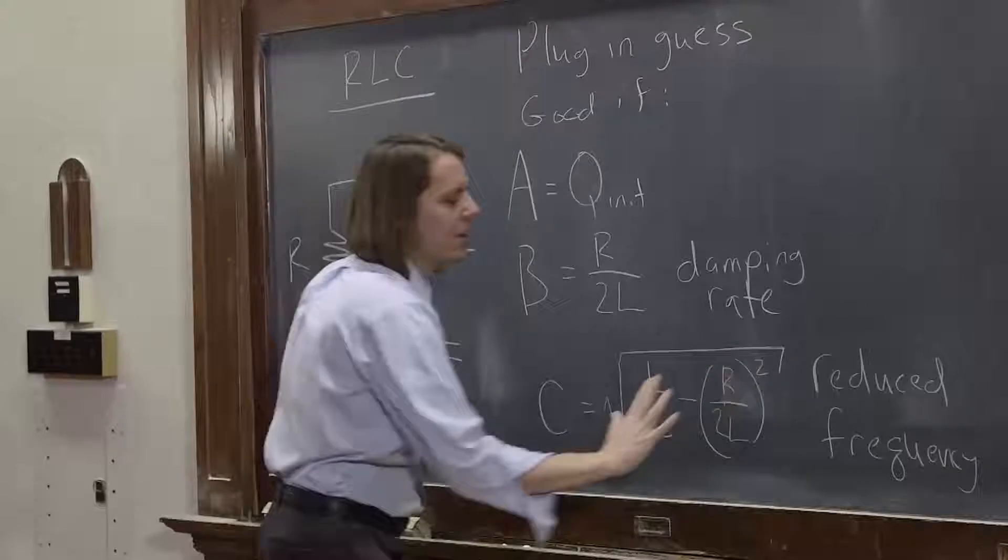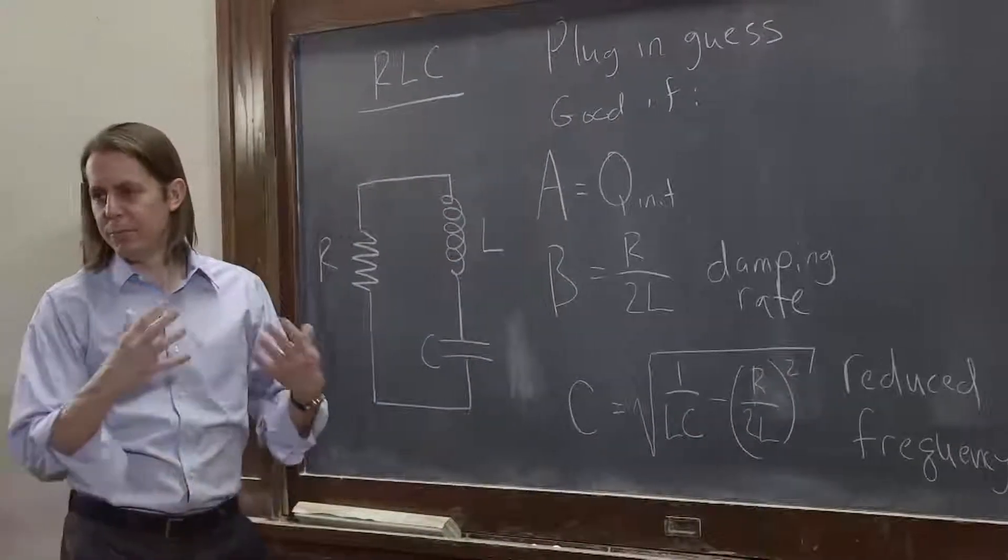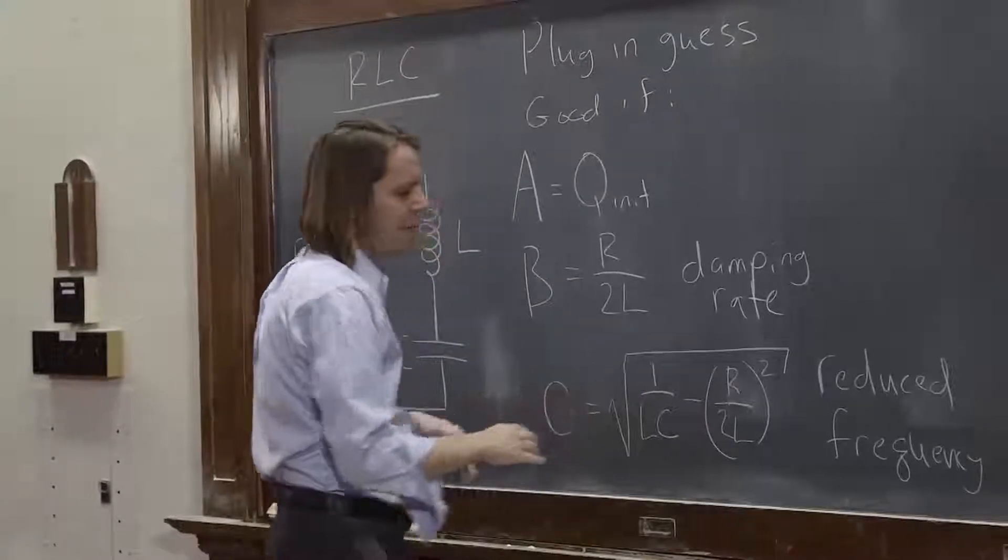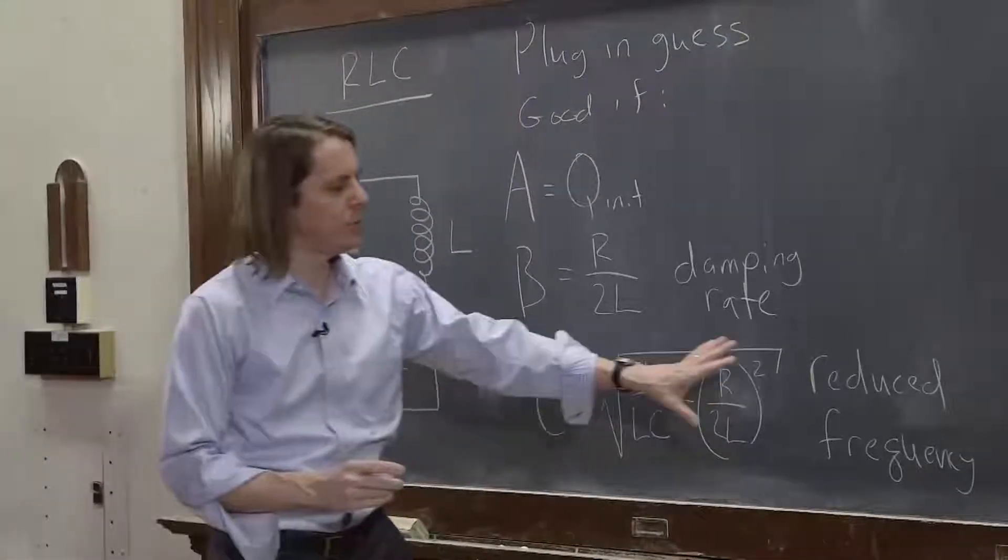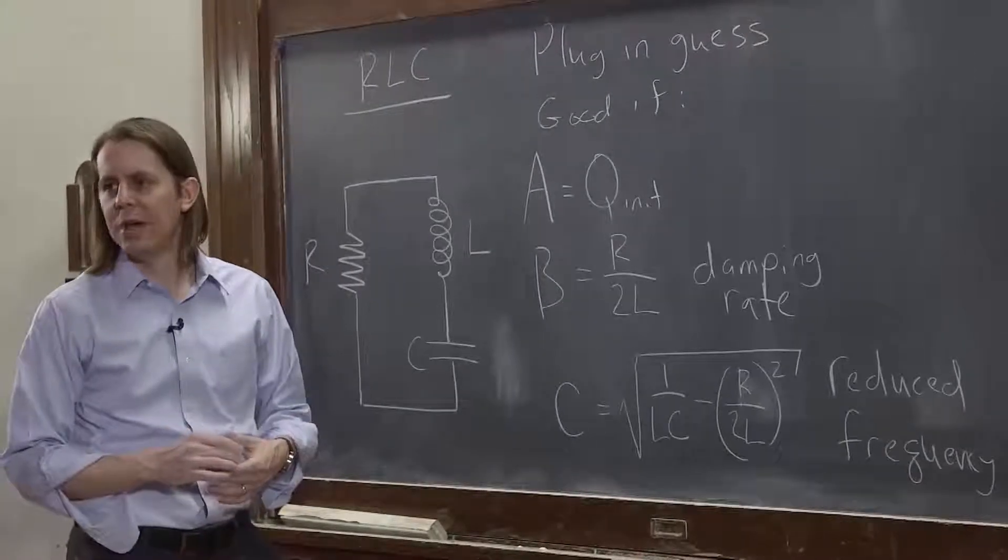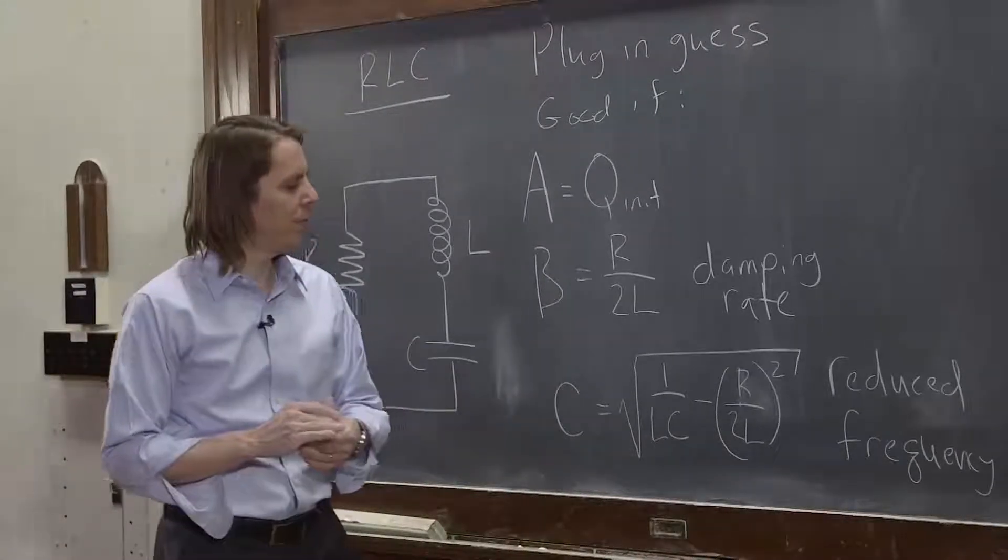Remember, the square root of 1 over LC was the frequency of just a pure LC circuit. When you add resistance in, what it does is it oscillates at a lower frequency. It's the reduced frequency. Sometimes it's called omega D for damped frequency, instead of omega naught for just the square root of 1 over LC.